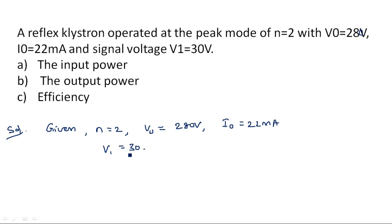Now using all these values we can calculate the input power. Input power is the DC input power, and the AC power is the output power. So we can say input power is nothing but DC power — PDC.